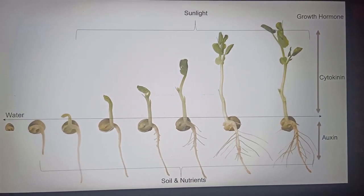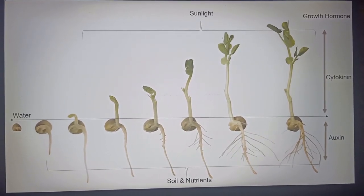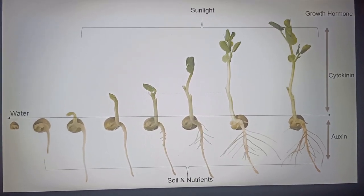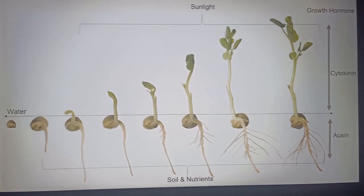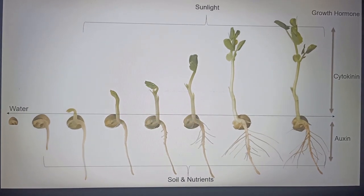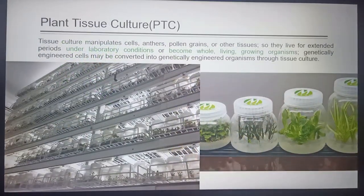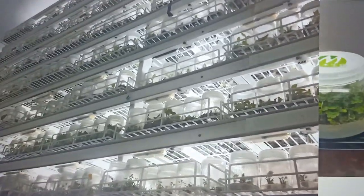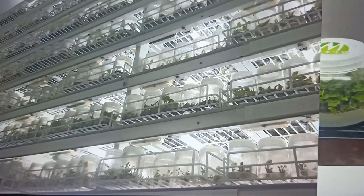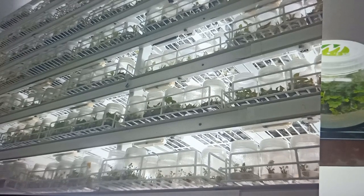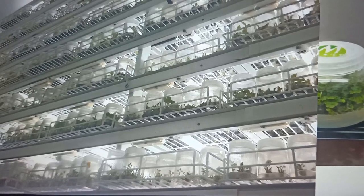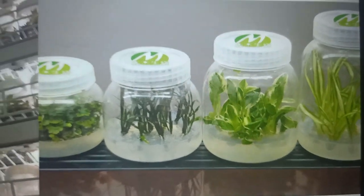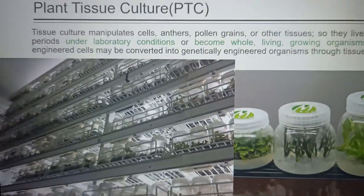Root development and shoot development occur through the help of natural processes with growth hormones. In plant tissue culture, we grow plants with the help of artificial light, nutrition, growth hormones, and controlled environment conditions — essentially growing the plants inside a bottle.